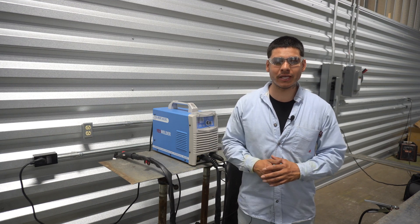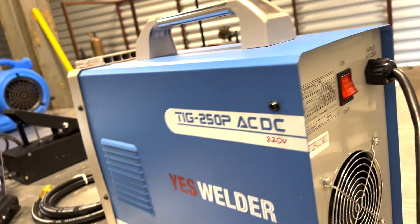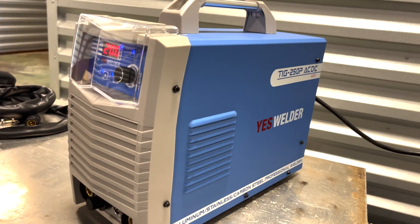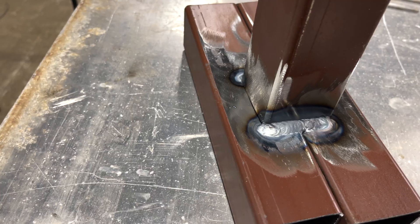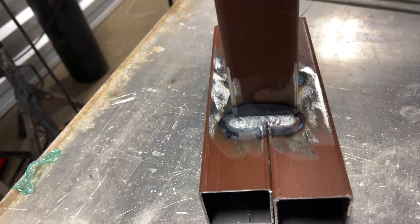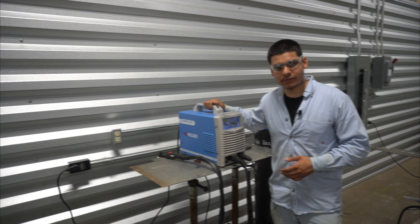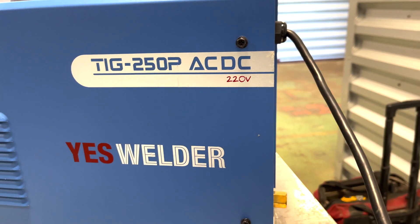What's up YesWelder family, my name is Rico and today I'll be welding with the 250P AC/DC by YesWelder. In today's video I'm using the 250P AC/DC by YesWelder, this is one of their higher end machines.